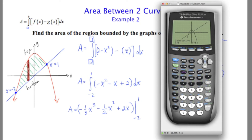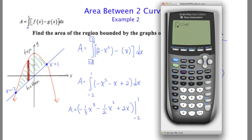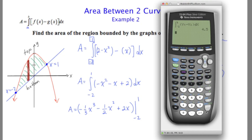Now I'm going to use the integration feature of the calculator to do the actual problem. I'll go to the home screen and use math, option 9, which is integration. I'm going to integrate from negative 2 to 1, and it's going to be the top curve, which is y1, minus the bottom curve, which is y2, with respect to x. When I do this, I get an answer of 4.5.